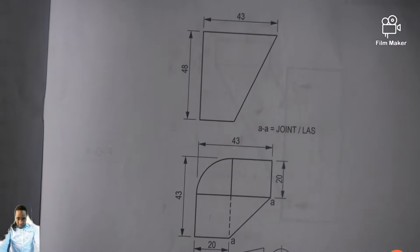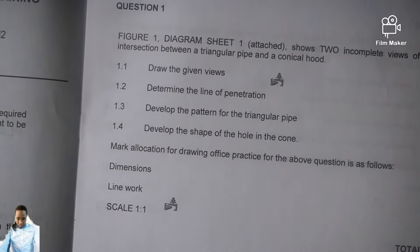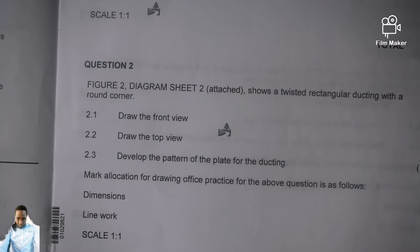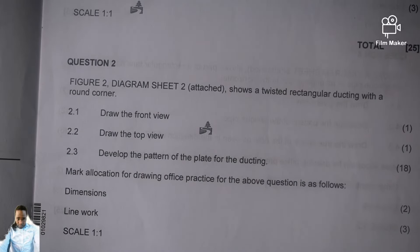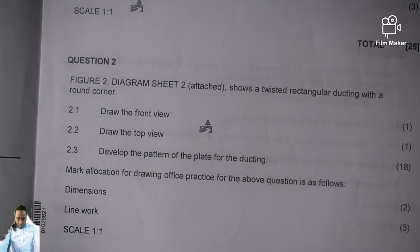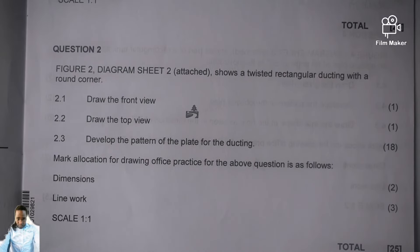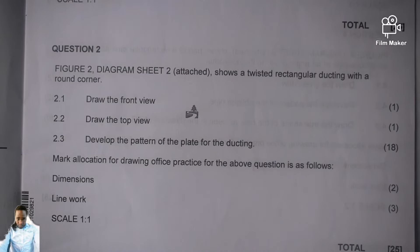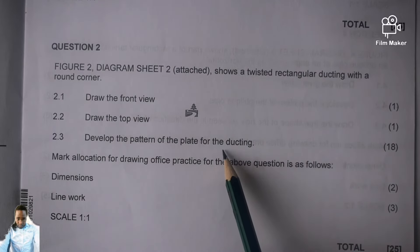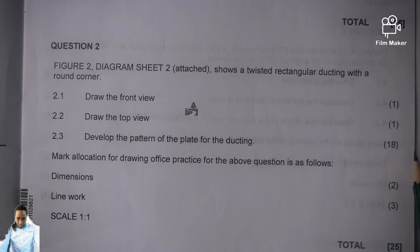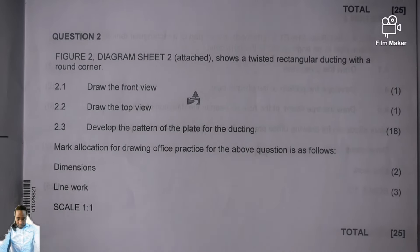I want us to look at figure 2, diagram sheet 2, figure 2. So these are the questions for figure 2. Diagram sheet 2 attached shows a twisted rectangular ducting with a round corner. Draw the front view — 1 mark. Draw the top view — 1 mark. Draw the development, develop the pattern of the plate for the ducting — 18 marks. All in all it is paying 25 marks.